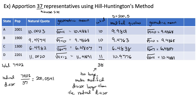Now we compare our modified quotas to their geometric means. A modified quota of 9.98 is greater than the geometric mean of 9.48, so this rounds up to 10. A modified quota of 9.47 is less than the geometric mean of 9.48, so this rounds down to 9. A modified quota of 6.4838 is greater than the geometric mean of 6.4807, so this rounds up to 7. A modified quota of 10.9776 is greater than its geometric mean of 10.4881, so this rounds up to 11. Adding all of these up gives 37, which is the correct house size.